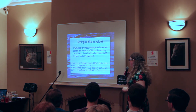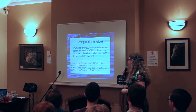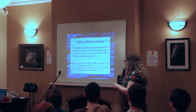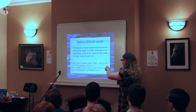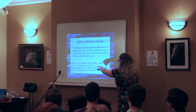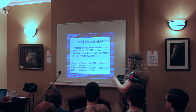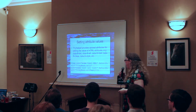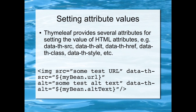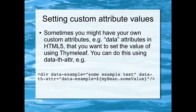And when you've got HTML attributes — for example, you've got an image with the src tag — then you've got a data-th-src tag that will replace your dummy test URL with the actual one from the Java. And likewise, for your alt tag, you've got data-th-alt. Thymeleaf actually gives you data-th attributes for every attribute type that you'll encounter in HTML5. But you can also use Thymeleaf to set custom attribute values as well. Within HTML5 we use a lot of data attributes for setting custom things for JavaScript to do things with, so you've got data-th-attr for that.